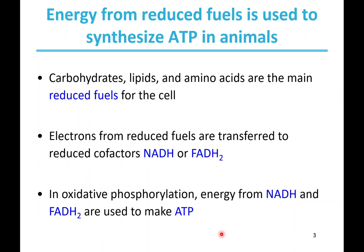Energy from reduced fuels is used to synthesize ATP. That's not really a surprise — we've been talking about this the whole time we've been talking about metabolism. The reduced fuels that we typically use are carbohydrates, also lipids and amino acids. We've been focusing primarily on carbohydrates as we talked about glycolysis, but lipids and amino acids are also important fuels for the cell. The electrons from these reduced fuels are transferred to the cofactors NADH and FADH2.